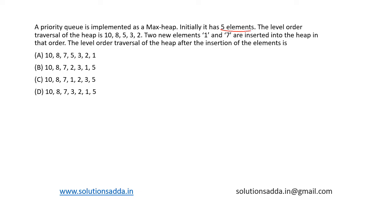The level order traversal of the heap is 10, 8, 5, 3, 2. Two new elements, 1 and 7, are inserted into the heap in that order. The level order traversal of the heap after the insertion of the elements is...